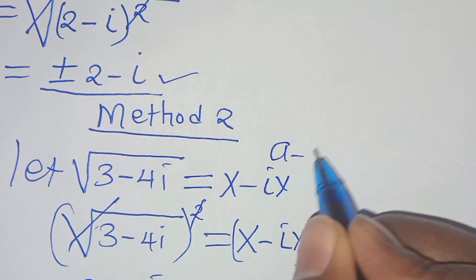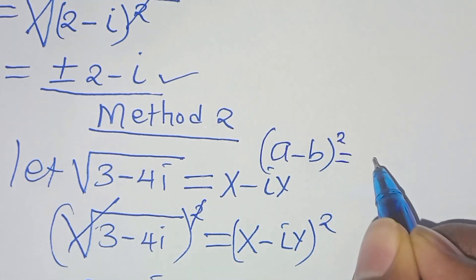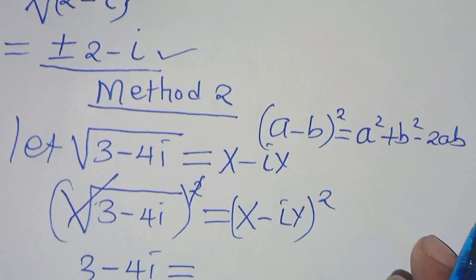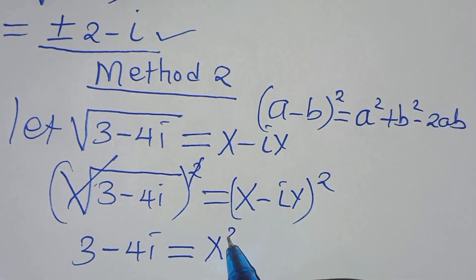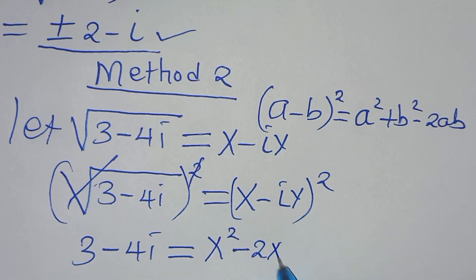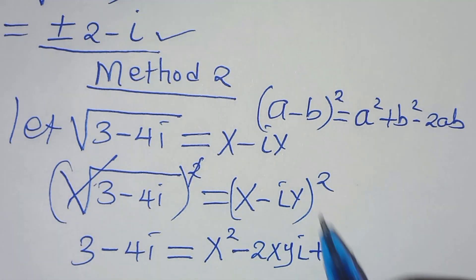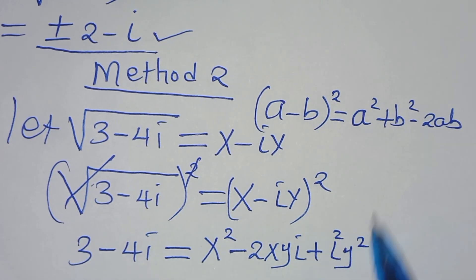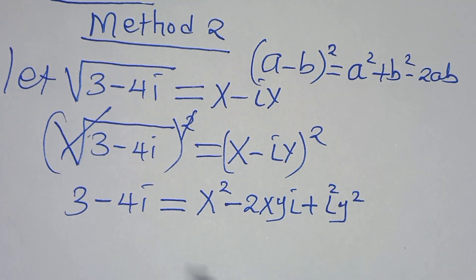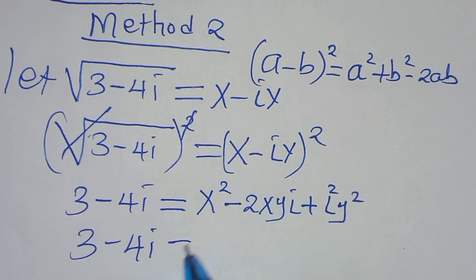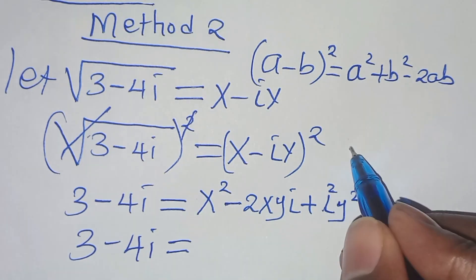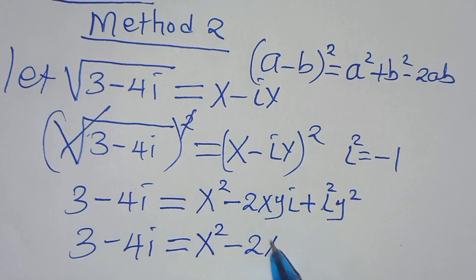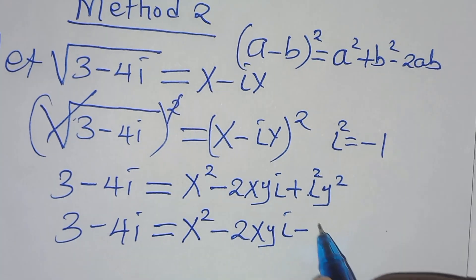This is in the form of a minus b raised to the power of 2, which we can express as a squared plus b squared minus 2ab. So let's apply this algebraic identity. So that now here we have x squared minus 2xy i, then plus i squared multiplied by y squared — so i squared y squared. The next step: i squared is minus 1, so this implies we have x squared minus 2xy i, then minus y squared.